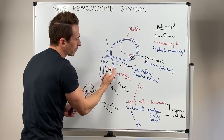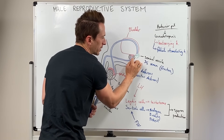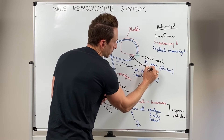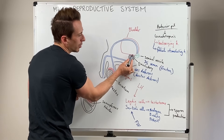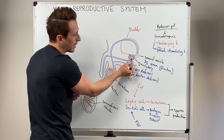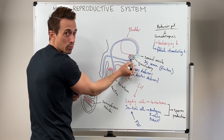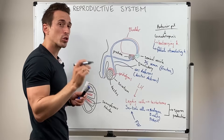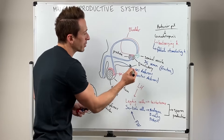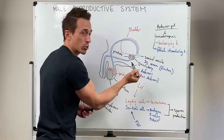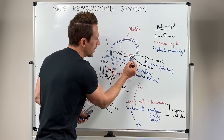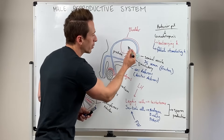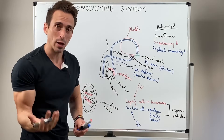The seminal fluid mixes with sperm and enters the ejaculatory duct. The ejaculatory duct merges together with the urethra coming from the bladder, forming the prostatic urethra. This structure is the prostate — not 'prostrate,' which means to lay down, but prostate. The prostate houses both the ejaculatory duct coming from the seminal vesicles and vas deferens, as well as the urethra, which carries both urine and semen.